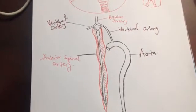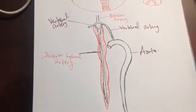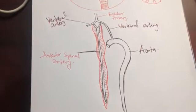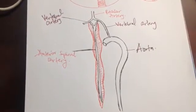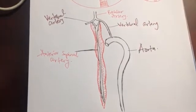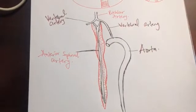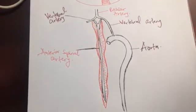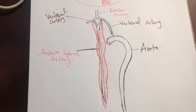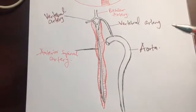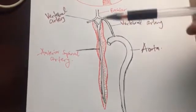Hello everyone, today we are going to discuss an important topic in neurology known as anterior spinal artery syndrome. But before we dive into the topic, let us look at the schematic anatomy of the spinal cord circulation. We have the anterior spinal artery and the posterior spinal artery, but concerning this presentation, we are going to only talk about the anterior spinal artery.